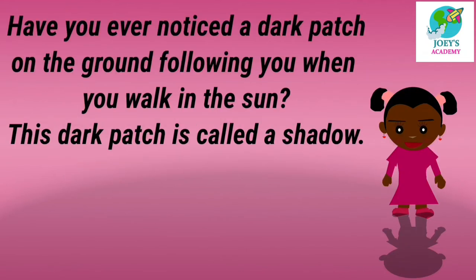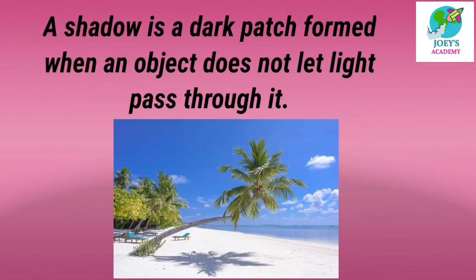Have you ever noticed a dark patch on the ground following you when you walk in the sun? This dark patch is called a shadow. क्या आपने कभी ये notice किया है कि आप जब sunlight में चल रहे हो और जमीन पे एक dark patch आपको follow कर रहा है? ये dark patch shadow होती है. You can see in this picture how a girl's shadow is formed on the ground.